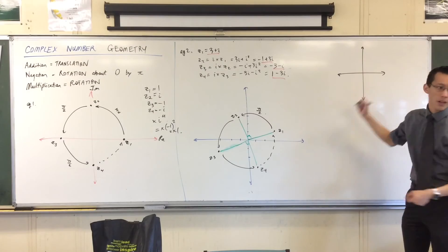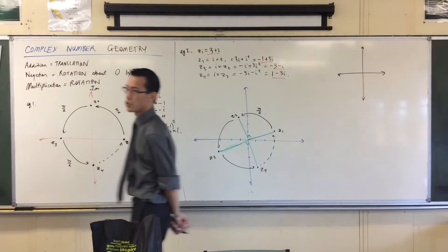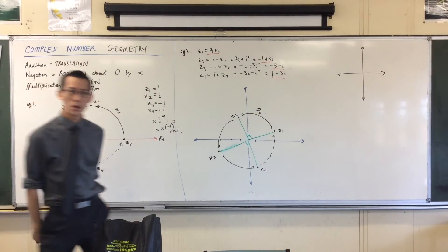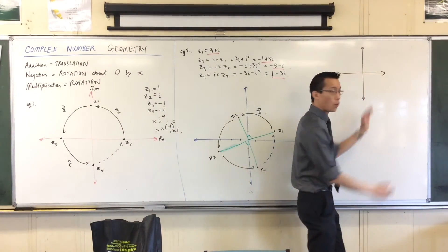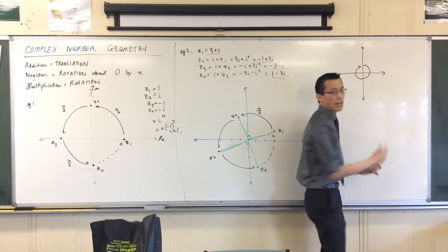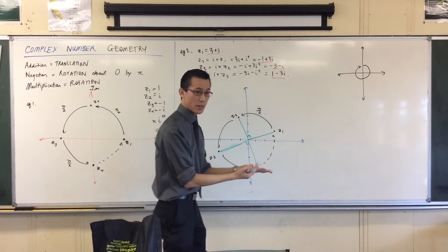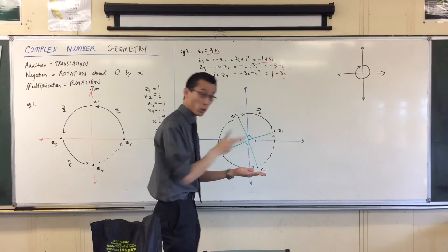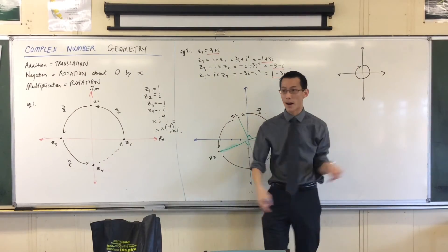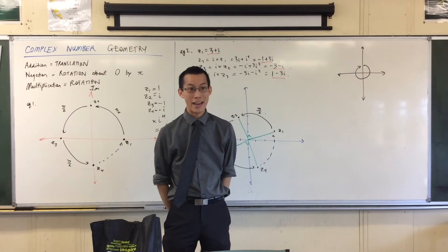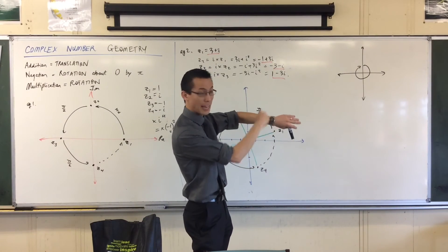We've got north, south, east, west — but how do we do three-digit true bearings? We start from north, and then which way do we count? We count clockwise. Now, the reason we start from north is because on a compass, if you're facing north, that's the way you're looking. And we count clockwise because, well, that's the way clocks count, and we're used to it.